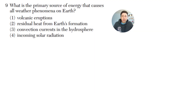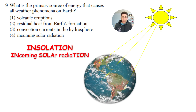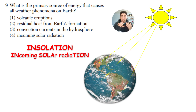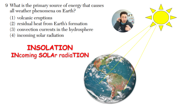Question nine: what is the primary source of energy that causes all weather phenomena on Earth — volcanic eruptions, residual heat from Earth's formation, convection currents in the hydrosphere, or incoming solar radiation? The answer is four — incoming solar radiation, which is insolation. The sun's rays influence all weather phenomena on Earth: they cause high and low pressure systems by shining more directly on some areas, drive winds, cause ocean evaporation, and lead to cloud formation. All weather phenomena are based on incoming solar radiation from the sun.